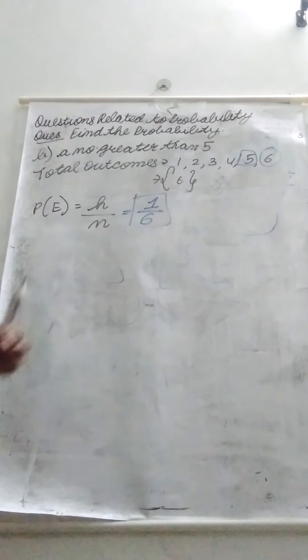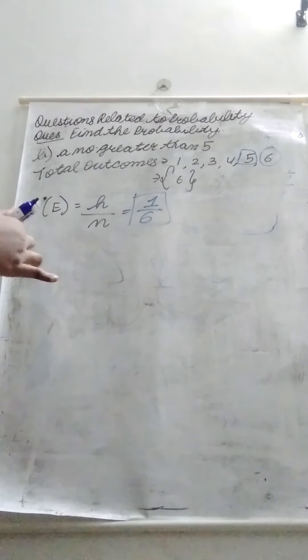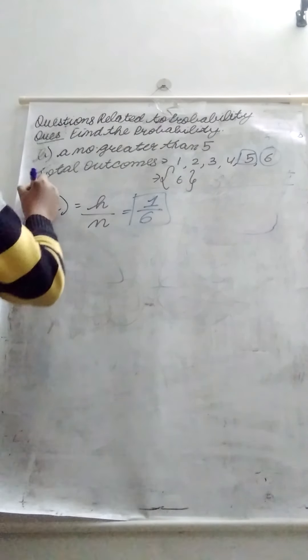This was the questions related to probability. Now we have to keep some things in this. First of all, we have to write total number of outcome. Which formula is this? We can represent a shorter form in this form.